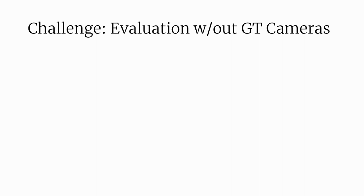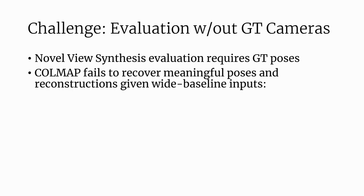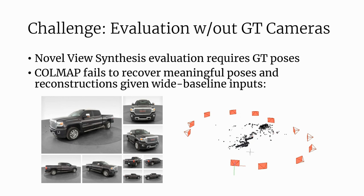The standard evaluation protocol of novel view synthesis requires held-out images associated with ground truth poses, which are used to query a trained model. While COLMAP is the tool of choice for recovering camera poses, we find that classical structure from motion fails catastrophically in our low-data, wide-baseline regime. In addition, objects often exhibit specularities and lack textures, making it difficult to find correspondences.